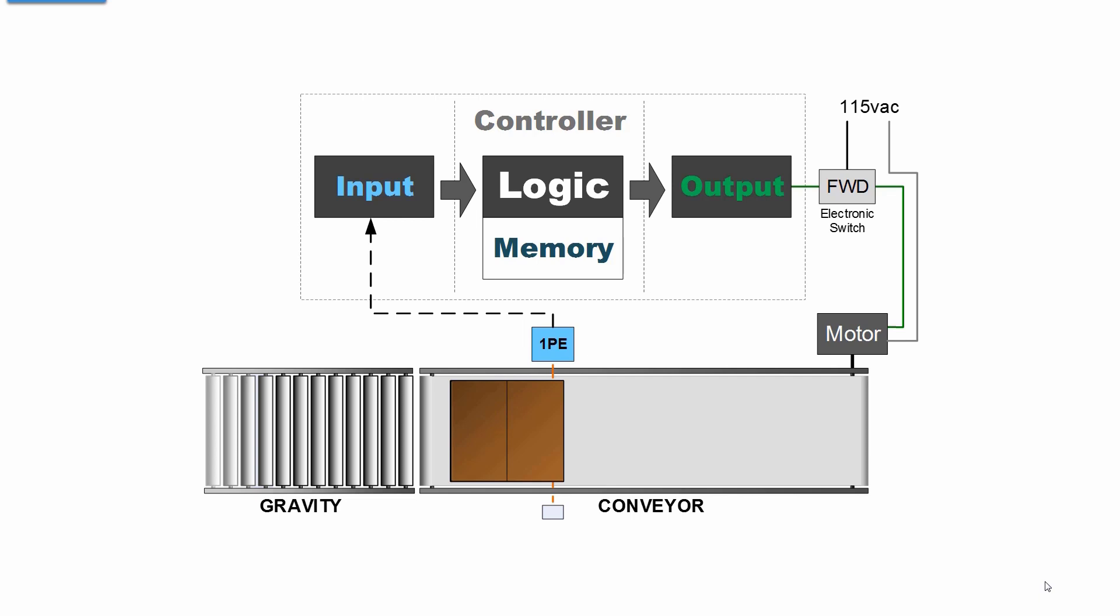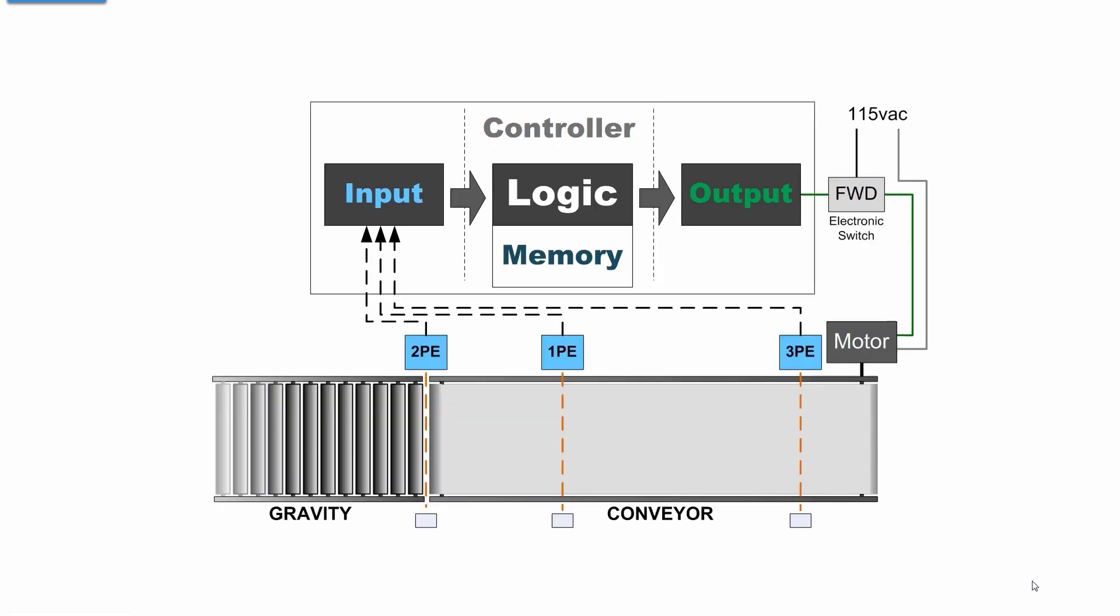The current logic is limited to running the conveyor forward until the photo eye is blocked. If you want to do more with the programmable logic controller, then you have to give it more instructions. To give it more instructions, you have to give it more information.